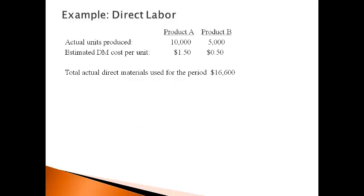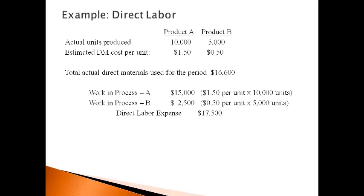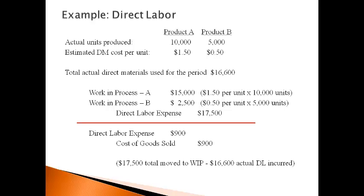Let's go through the process for direct labor. The first step is to record the estimated cost for each product to the separate work in process accounts. The amount is the actual units made multiplied by the estimated cost of making one unit. The second step is to adjust the estimated cost of direct labor moved to work in process to equal the total actual amount incurred by the company. When the amount originally recorded to work in process is too high, the cost must be reduced. The adjustment is made to cost of goods sold because it is not possible to know which specific work in process account to adjust.